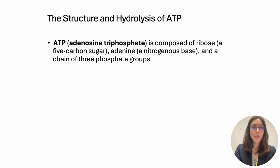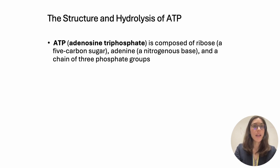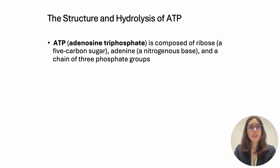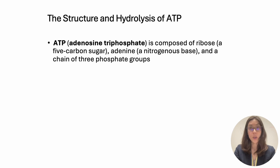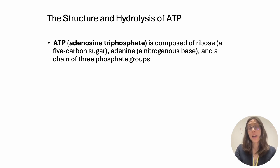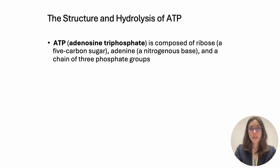Please remember the full name of this molecule, adenosine triphosphate, and that it is composed of a ribose sugar, which is a five-carbon sugar, a five-carbon monosaccharide; adenine, which is a nitrogenous base — there are five nitrogenous bases and this is one of them, it's always that one for ATP — and a chain of three phosphate groups.